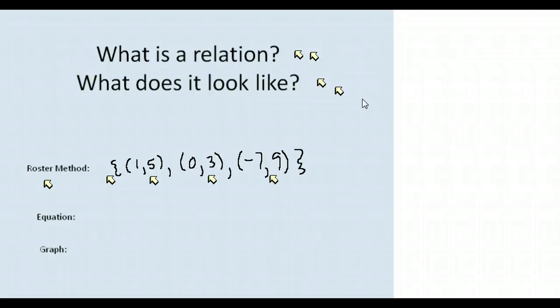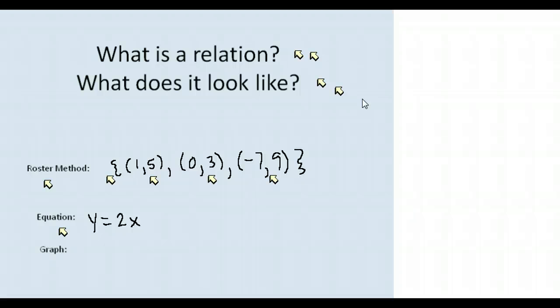Another way to represent a relation is by giving you an equation. For example, Y is equal to 2X. That is the relationship that X and Y have — 2 times X is equal to Y. We could create a graph of this; it has an infinite number of points because we could plug any real number in for X and get its corresponding Y.